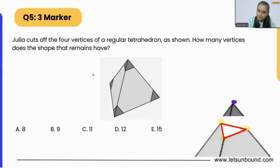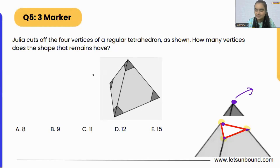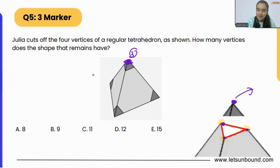The top vertex — the fourth one — we have already cut down, so we won't count that. We will have only one, two, and three vertices remaining at that cut. So cutting one vertex gives us three new vertices. We will have three at the top, three here, three here, and three here as well.